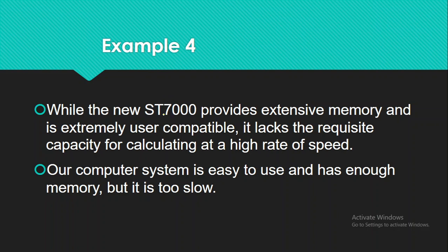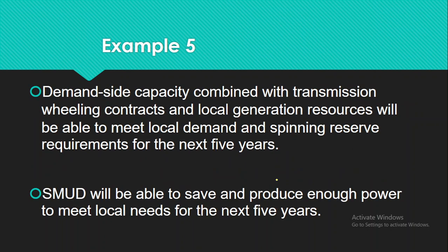Another example: 'While the new ST-7000 provides extensive memory and is extremely user compatible, it lacks the requisite capacity for calculating at a high rate of speed.' You can simply say: 'Our computer system is easy to use and has enough memory, but it is too slow.' Similarly, instead of 'Demand-side capacity combined with transmission wheeling contracts and local generation resources will be able to meet local demand and spinning reserve requirements for the next five years,' you can say: 'SMUD will be able to save and provide enough power to meet local needs for the next five years.' Use easy vocabulary.